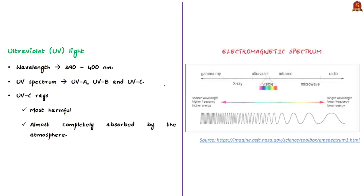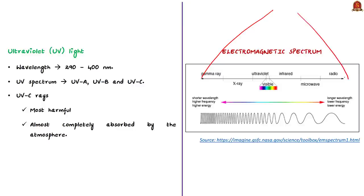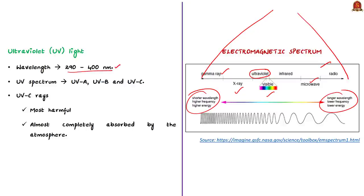First, you need to know about electromagnetic radiation. It is a form of energy that is all around us and takes many forms based on wavelength and frequency. Radio waves, microwaves, X-rays, gamma rays, visible light — all form a part of electromagnetic radiation, and one such is ultraviolet light. The ultraviolet radiation that reaches Earth from the sun has a wavelength between 290 and 400 nanometers, which is shorter than wavelengths of visible light (400 to 700 nanometers). Note that ultraviolet waves are invisible to the human eye.